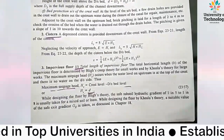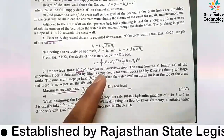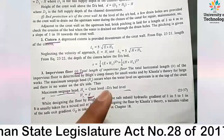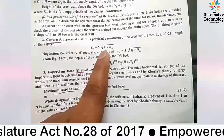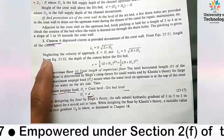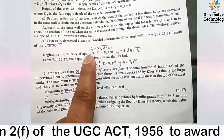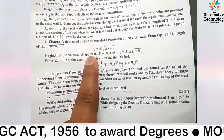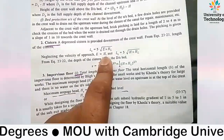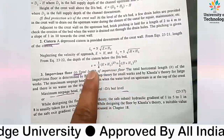Here, E is the height from the crest level to the upstream total energy level, known as capital E. If we neglect the velocity of approach, then the full supply level to the total energy line means E becomes approximately equal to capital H.